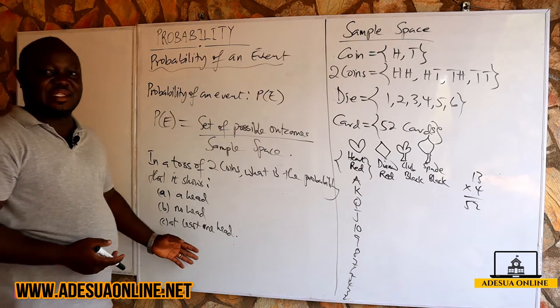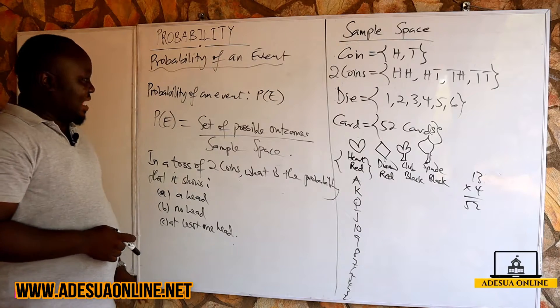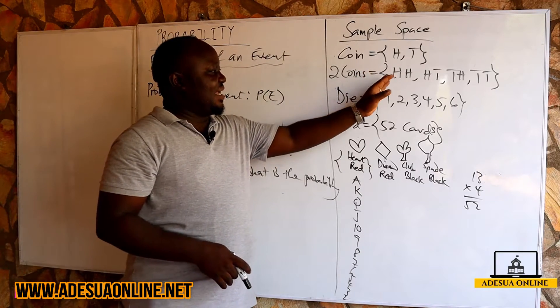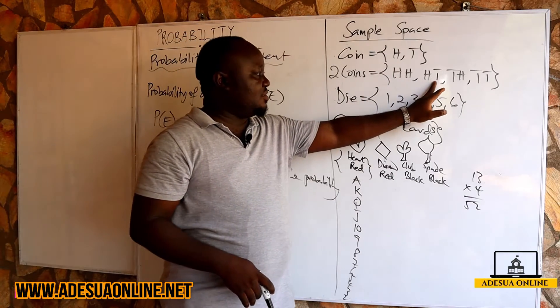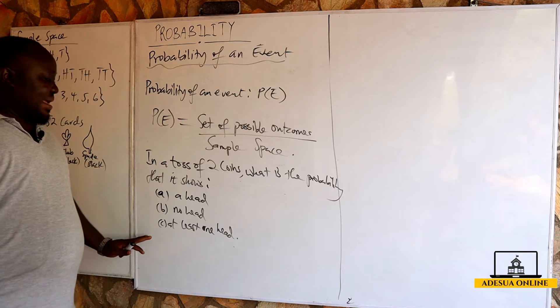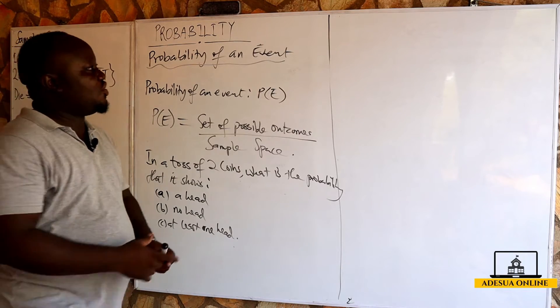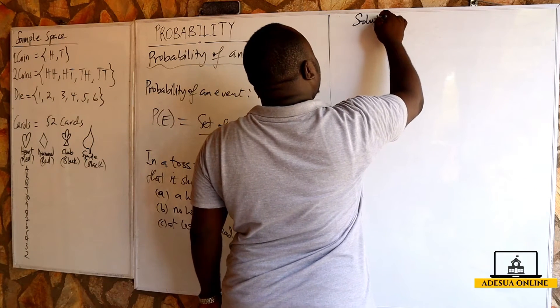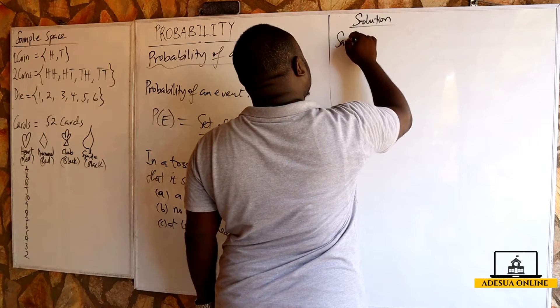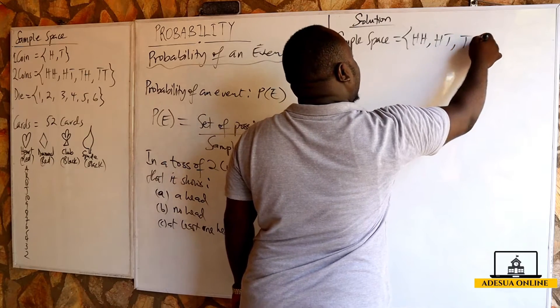The first thing you do when you have a question like this is to write down the sample space. Our sample space for two coins is: head-head, head-tail, tail-head, or tail-tail.